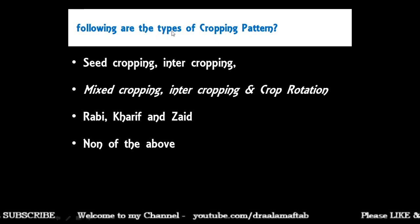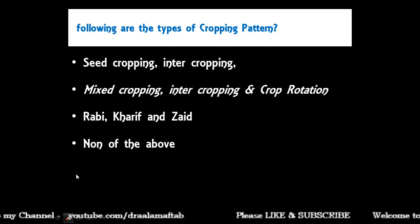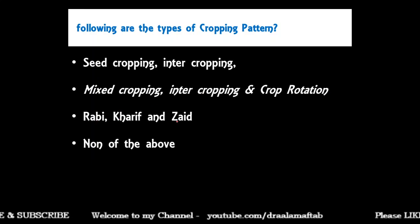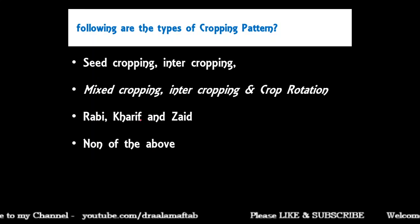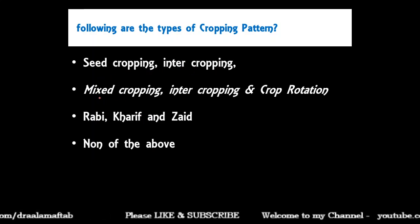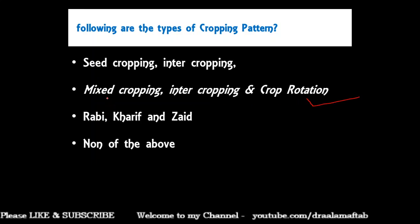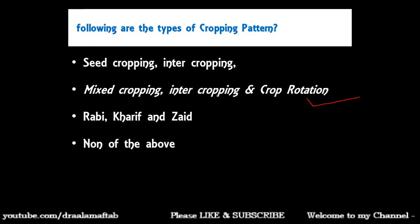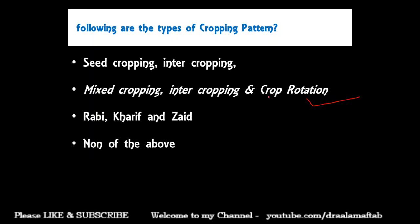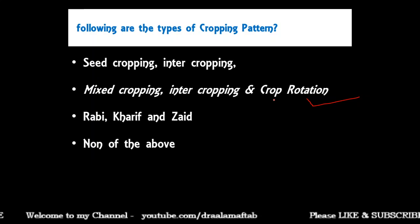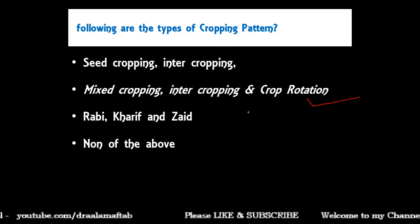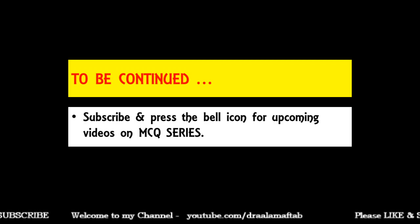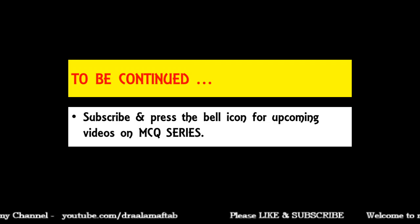The types of cropping patterns include: mixed cropping — sowing two or more crops simultaneously; intercropping — sowing two or more crops in a definite pattern in the same field; and crop rotation — changing the type of crops each season. These are the three important cropping patterns in India. I will bring the next video from Chapter 3, so please subscribe and press the bell icon for upcoming videos. Thank you so much.